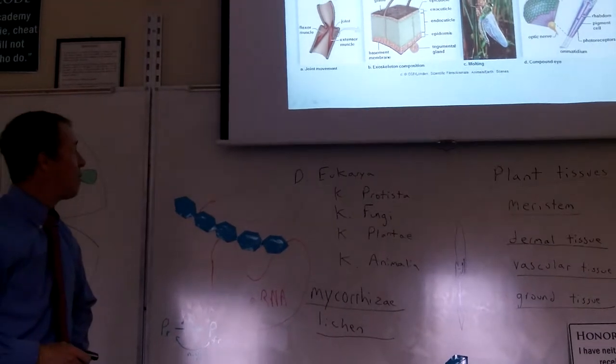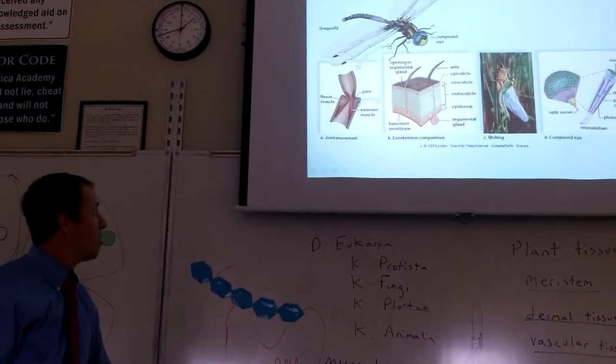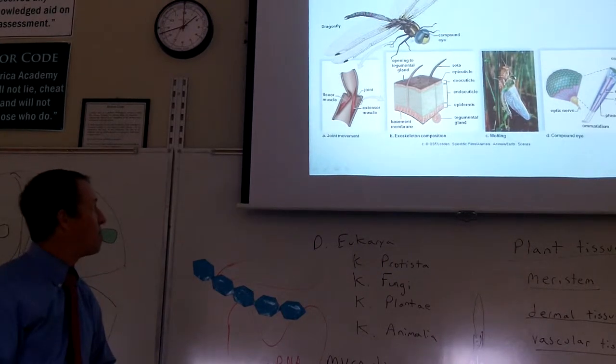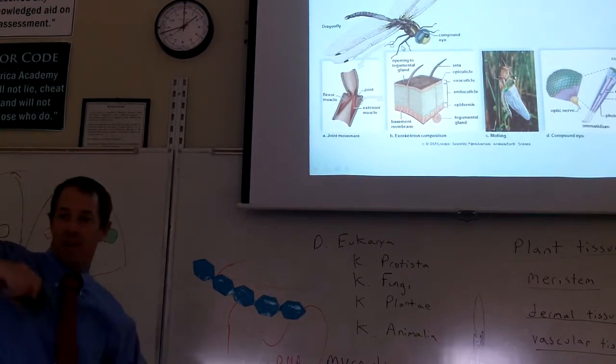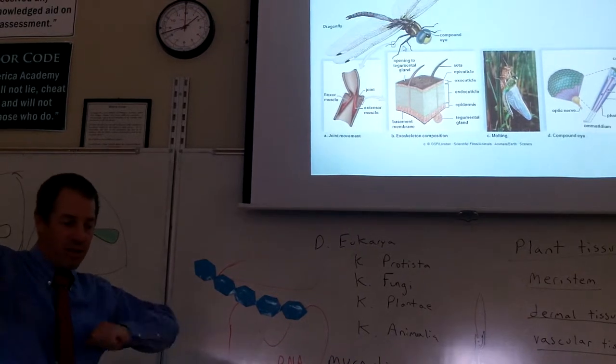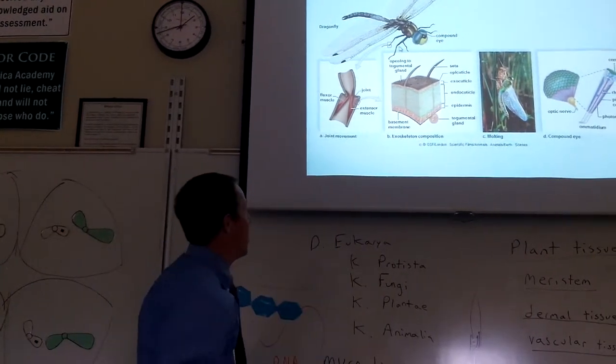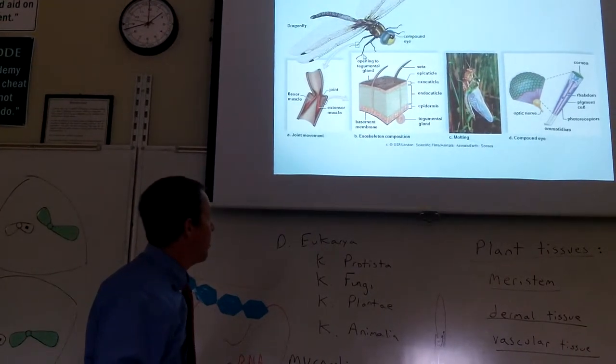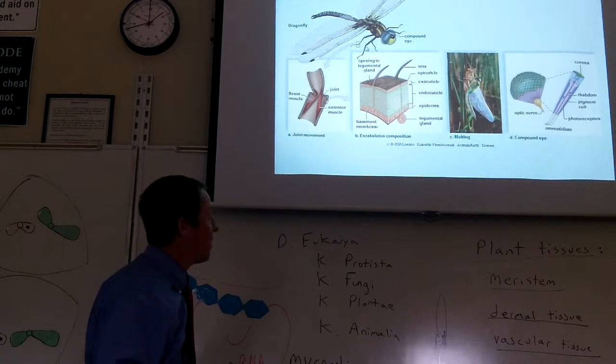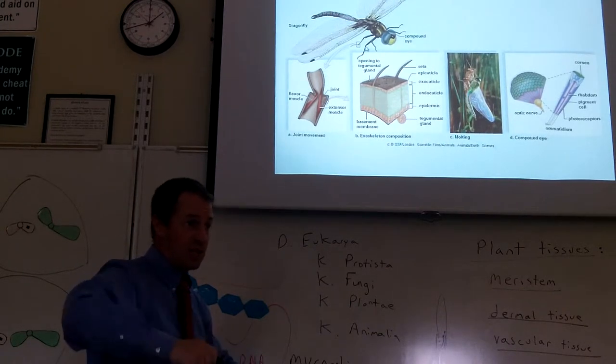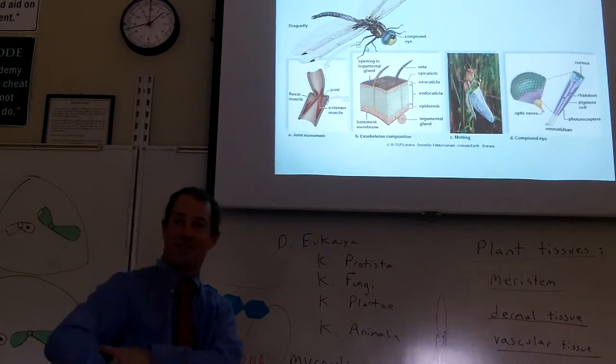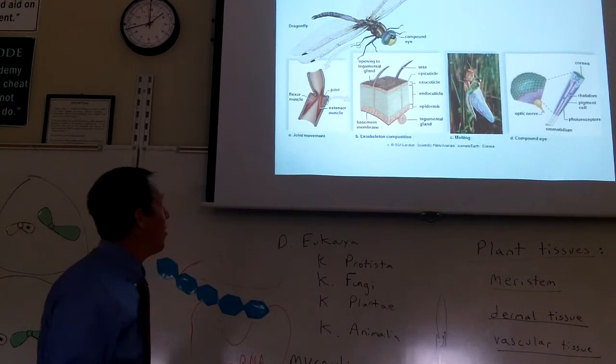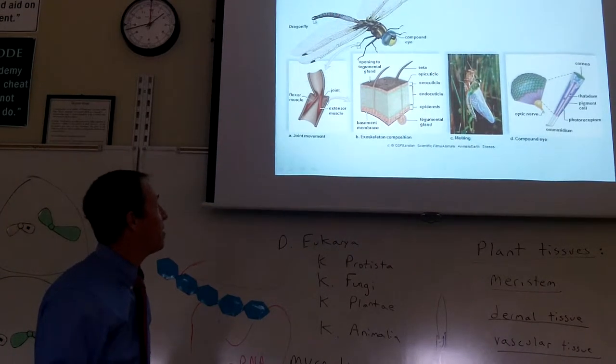But we have evolved what we call jointed appendages. Jointed appendages are arms and legs that have joints, just like your elbow joint. So the different parts of the arm and leg can move independently of one another. And the whole thing can be armored. You can make the sides very tough and only have flexibility at the joints.